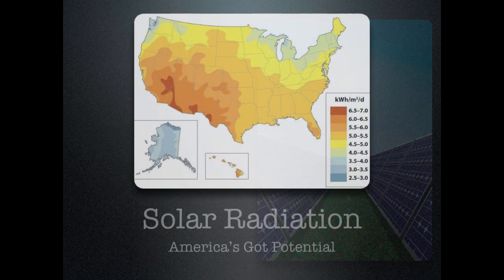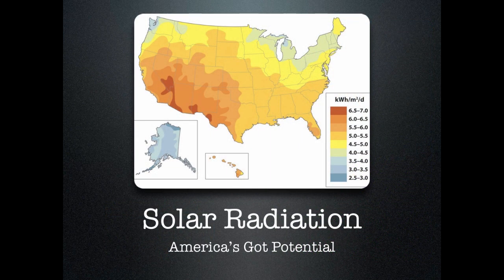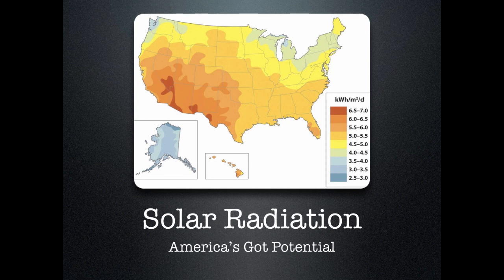We're going to start out with solar energy, and I want to begin by showing you this map. This is a map of solar potential in America. The darker the color, the more potential there is for electricity generation using solar energy. So most of the country has got pretty good potential for generating electricity using solar power. Obviously, the area that has got the most potential is right down here in the southwest, where it is sunny for most of the year.